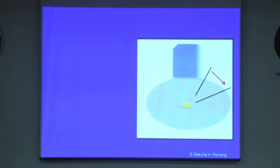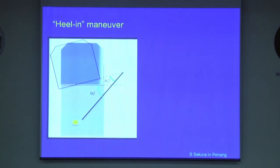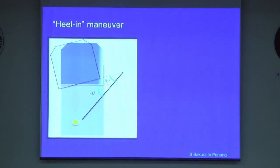We insert a needle as far away from the transducer as the needle length will allow. Finally, there is a technique called the heeling maneuver — press the further edge of the transducer into the skin while lifting the nearest edge. This has the effect of making a less obtuse needle angle relative to the transducer, which can improve visibility.